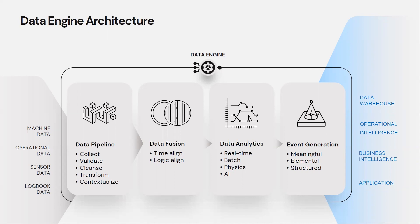The next step is data analytics. You can apply different types of models — physics models, AI models — and apply real-time or batch analysis. The goal is to produce what we call events. Events are not the final insights delivered to the user, but rather the fundamental units of insights — each event is something that has happened, and you want to get to the root cause through data fusion and analytics. Those events can then be very easily used in BI software and analyzed using traditional analytics techniques. The data engine basically transforms raw, operational, time-series data into events that fit into the modern data stack.